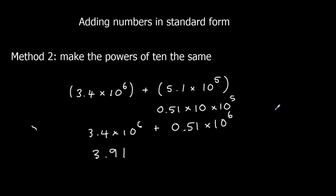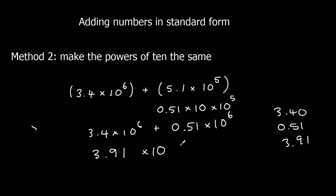We could have written it out and added down: 3.91, and that's still in millions. So the answer is 3.91 times 10 to the power of 6. You can use either of those two methods to add numbers in standard form.